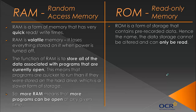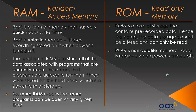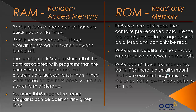Looking at ROM now — ROM is a form of storage that contains pre-recorded data. The name gives a hint: read only memory, meaning the data stored on it cannot be altered and can only be read. You can't change what's stored on ROM. It is non-volatile, meaning everything on it is retained even when power is turned off. ROM is used in very small amounts — maybe only 30 megabytes — compared to RAM's 4 to 8 gigabytes.